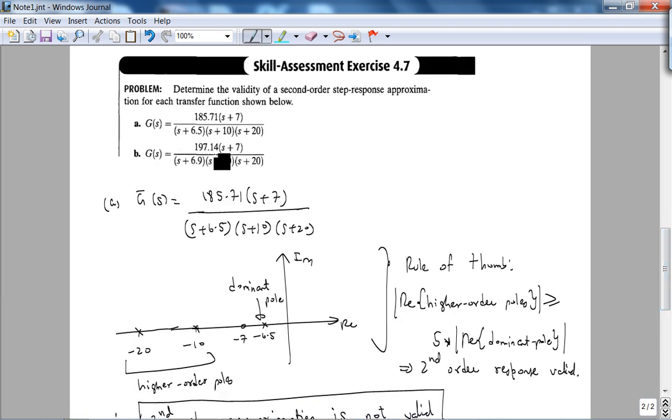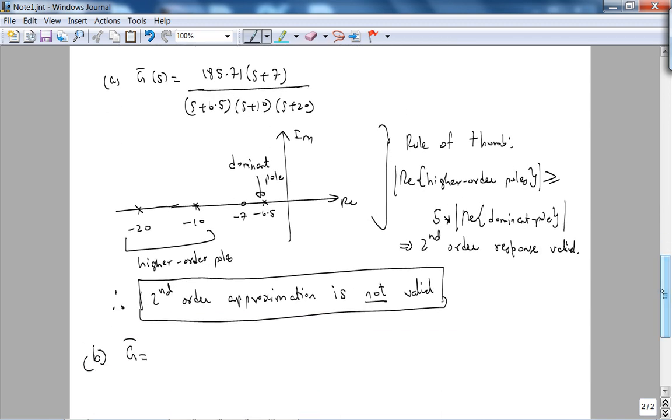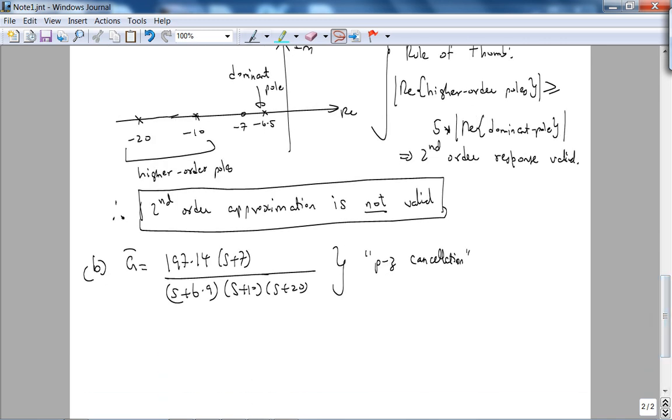So for part B, you have G-bar is 197.14 times S plus 7. It's almost the same thing, except now this finite pole has moved very close to the finite zero. And in a sense, we are having pole zero cancellation. So having this pole zero cancellation, it's almost as if you can ignore this zero and this pole, and then, in essence, you have a second order system. So that's why the book says second order approximation is valid. So here, we actually did not have to apply this rule of thumb because of this pole zero cancellation.